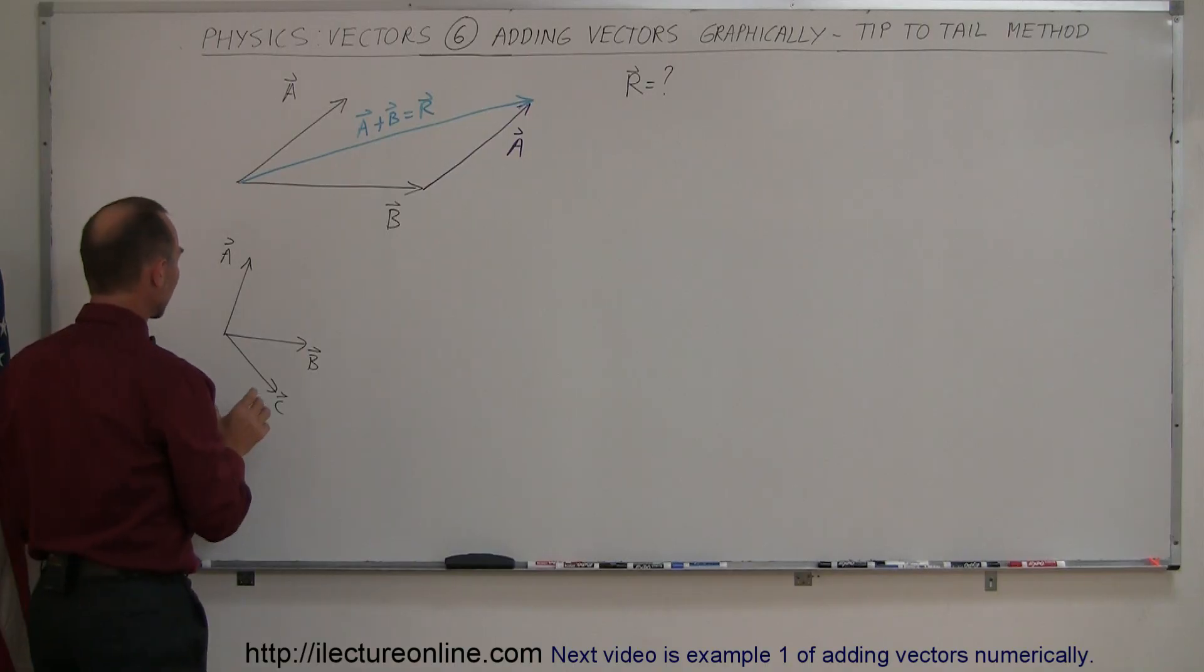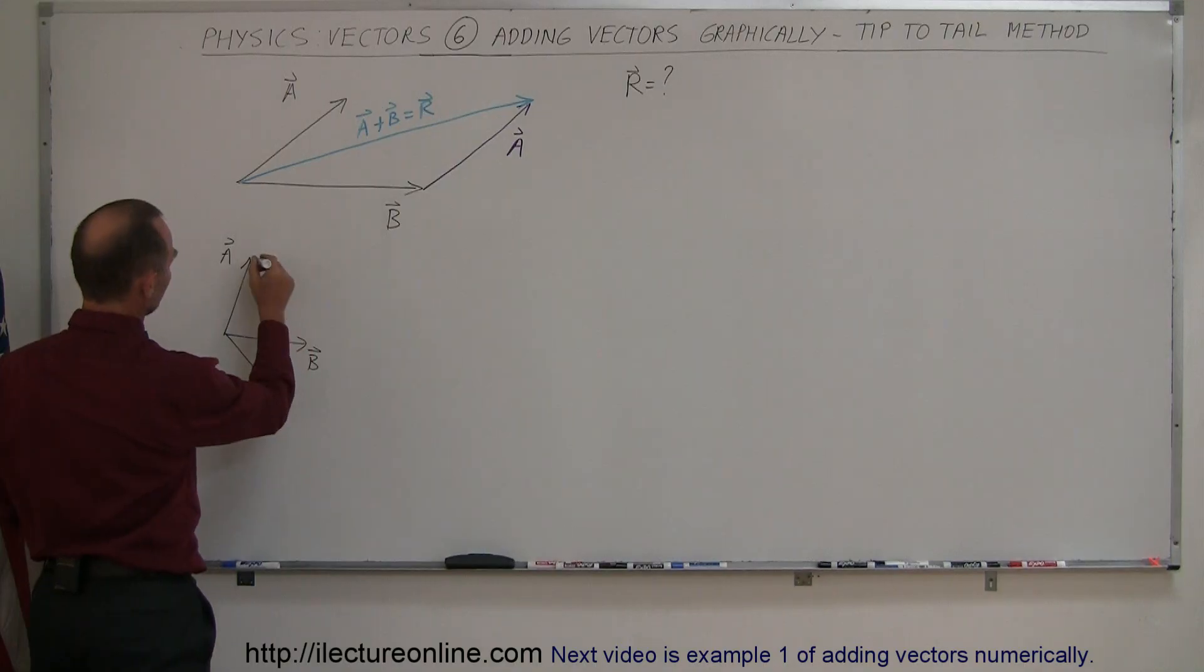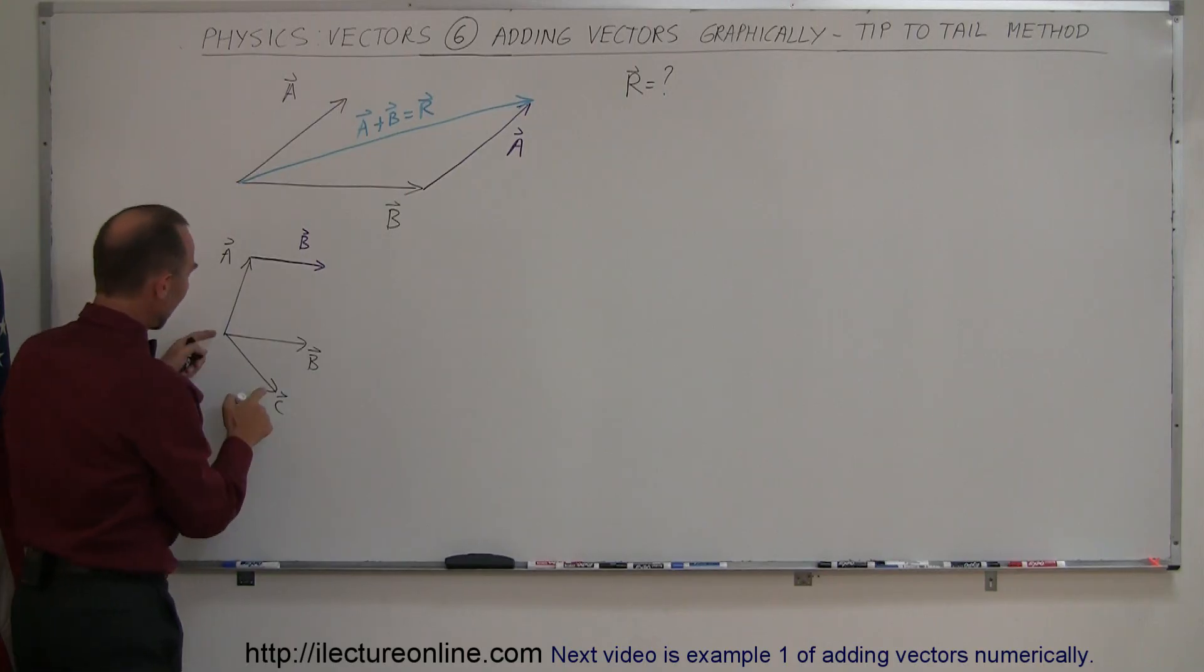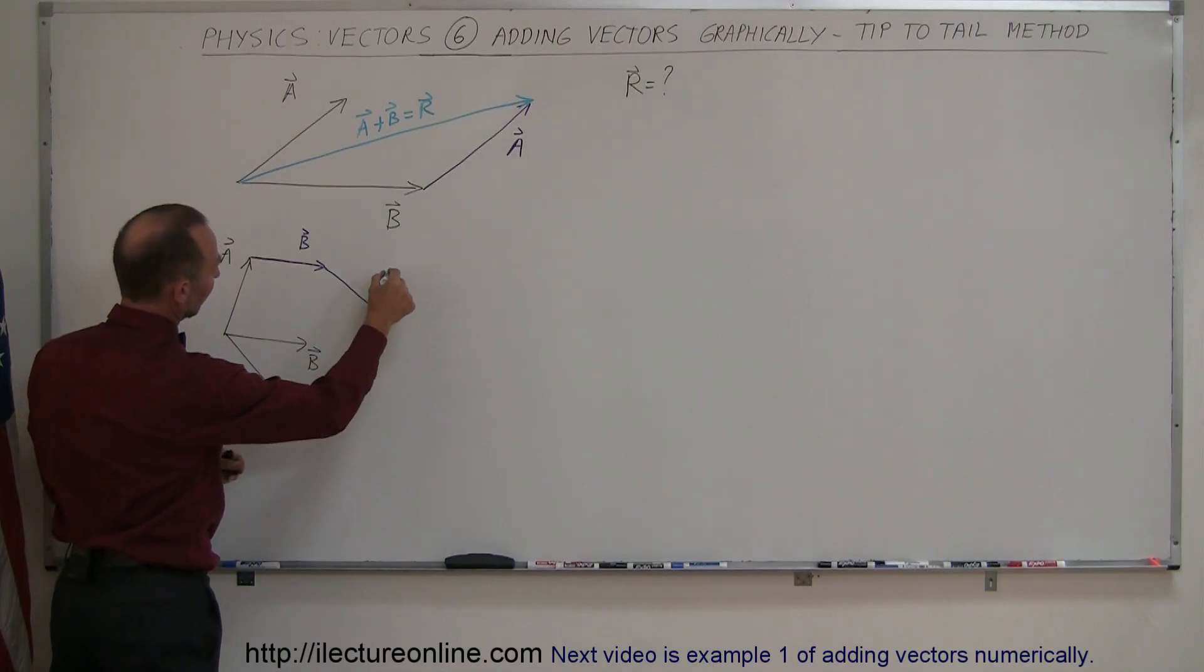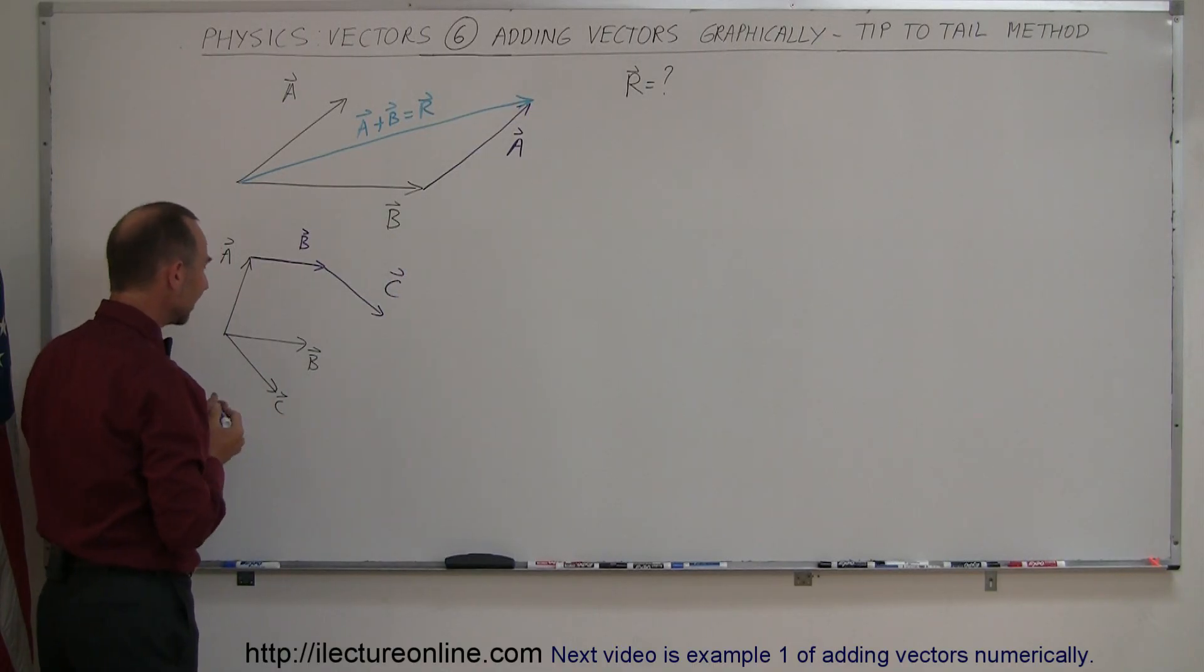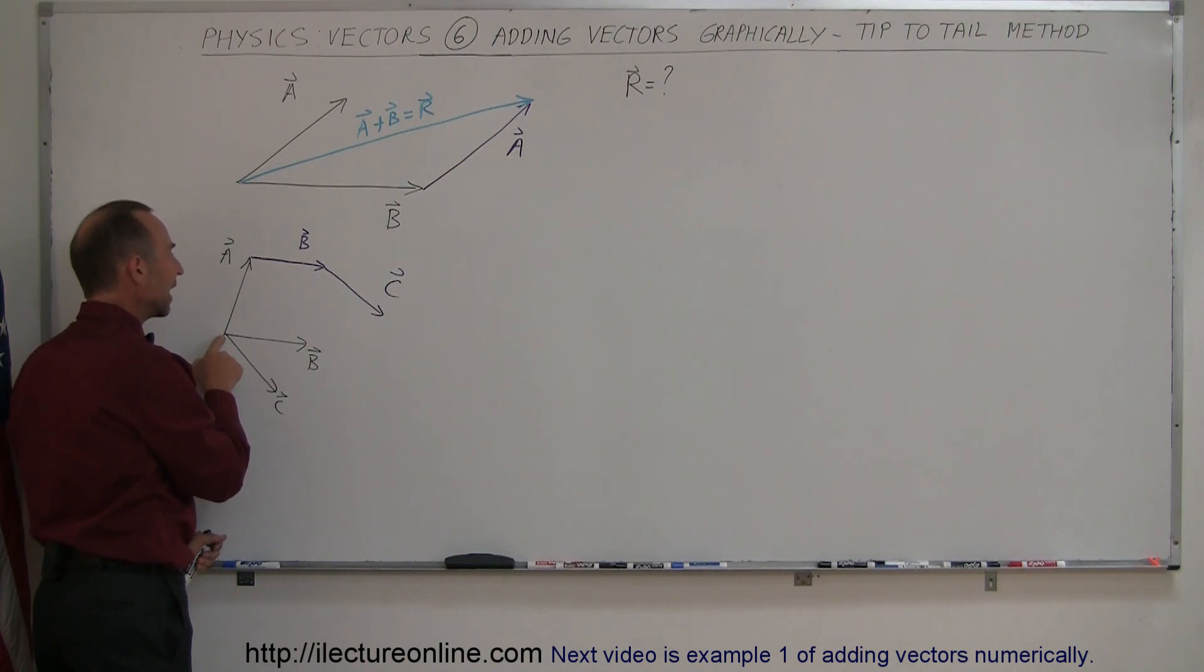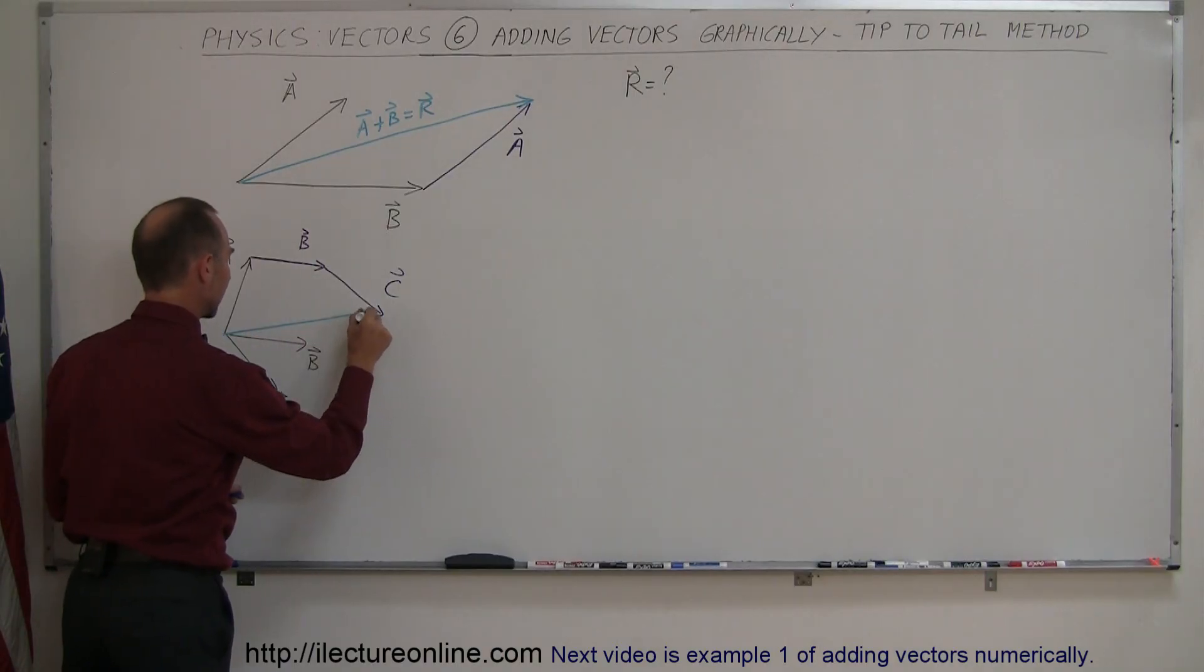So what I'm going to do is I'm going to leave vector A alone, take vector B and move it over here. So this now becomes my vector B moving into new position. I'm now going to take vector C and move it over here. Now vector C. And now I can draw a single line from the start or the tail of vector A to the tip of vector C. Like so.